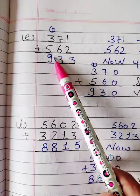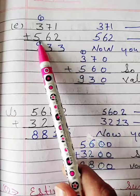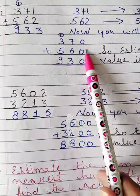Now question number E, 371, here you will write 370, and 562 here you will write 560. Now you will add 370 and 560, so your estimated value is 930.